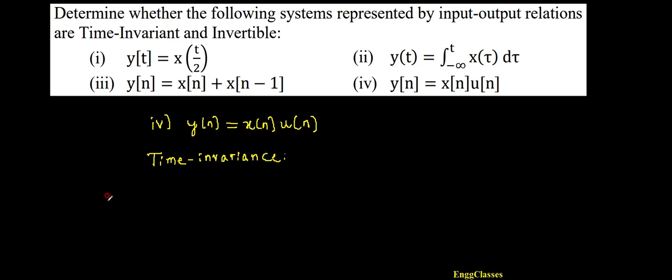The definition says that a shift in the input leads to a shift in the output, identical shift in the output. So what is shift in the input? Input is x(n), shift in the input is nothing but x(n minus n0). Give this to a system operator H so that I would get the output y1(n).